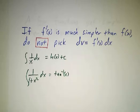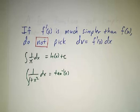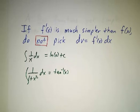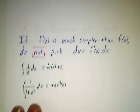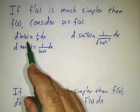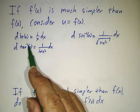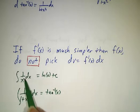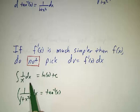Things that get way more complicated when you integrate them do not belong in dv. So whether you have a function that gets much simpler when differentiated or much worse when integrated, in either of those cases, you probably want to put it into u and not into dv.